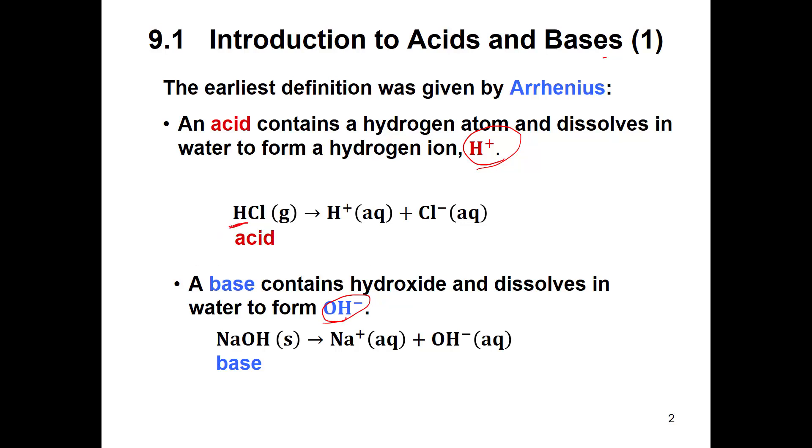That's why when we write acids we typically write the H in front of the formula because that's what's going to be donated in the form of the H+, and then the other ion is whatever that nonmetal is or the other ion. A base is going to have the hydroxide, so that'll be the end part of the formula because it's negative, and then it'll also have a positive ion that was attached to that.